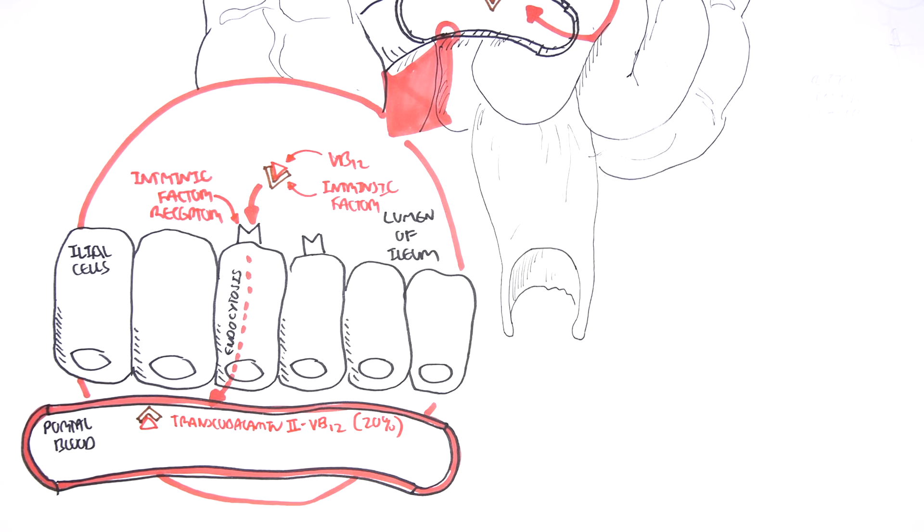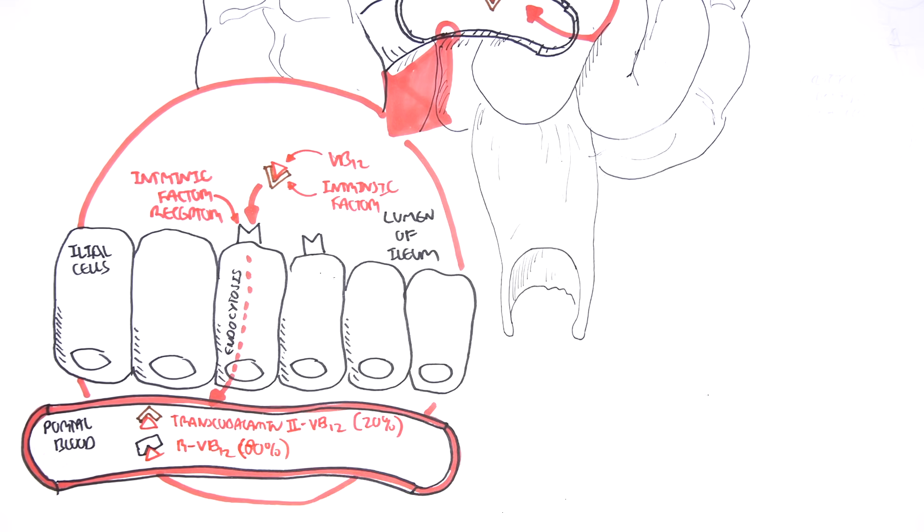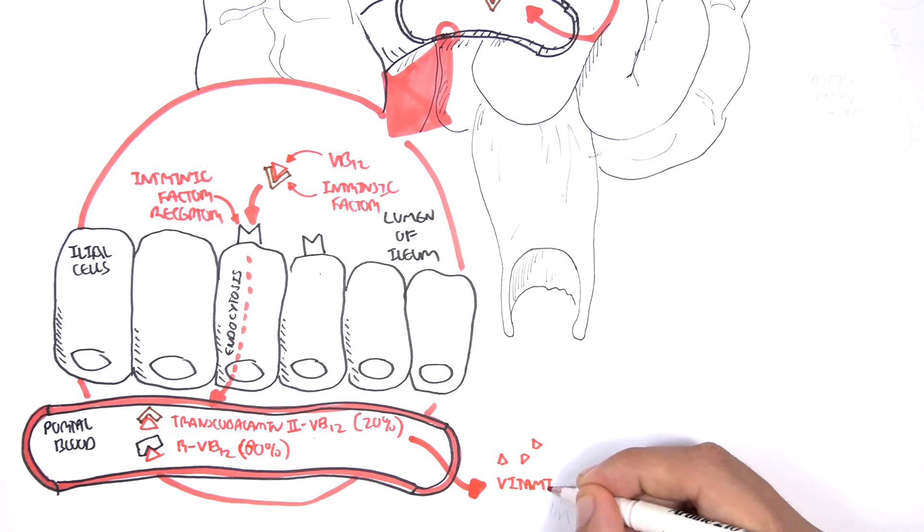However, interestingly, the majority of vitamin B12 is bound to transcobalamin 1, remember, also known as the R-binder. Transcobalamin 2 is responsible for delivering the vitamin B12 to body tissues, whereas transcobalamin 1 also circulates and binds approximately 80% of the circulating vitamin B12, rendering it unavailable for cellular delivery by the transcobalamin 2. So transcobalamin 2 delivers the vitamin B12 to body tissues, and that's the important one.